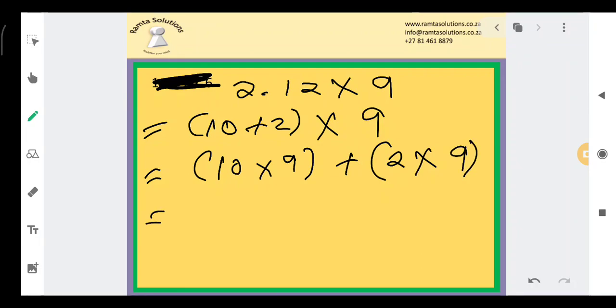This is easier. 10 times 9, I remember it was 90 when I was still in school. Now 2 times 9 is 18. Our answer is 90 plus 18, which equals 108.